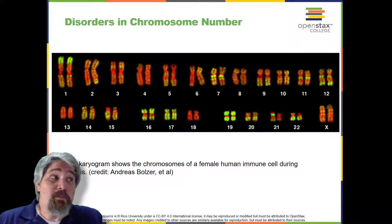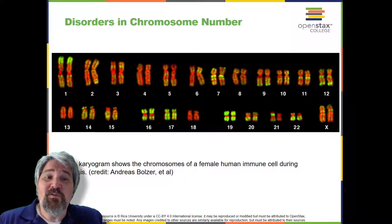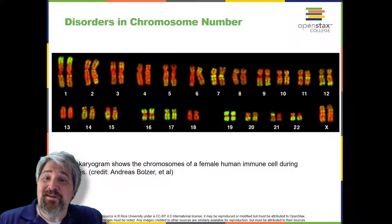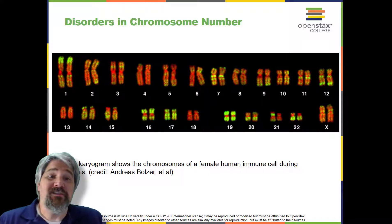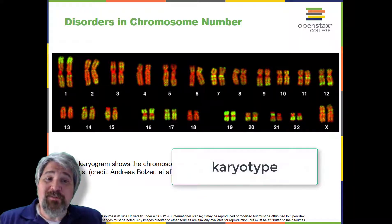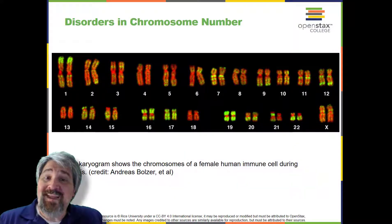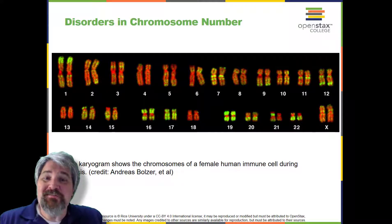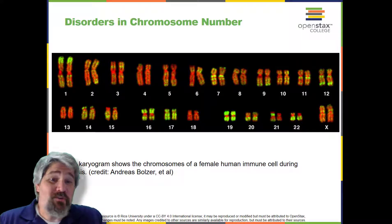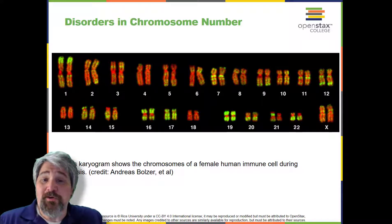Disorders in chromosome number: the isolation and microscopic observation of chromosomes form the basis of cytogenetics and is the primary method by which clinicians detect chromosomal abnormalities in humans. A karyotype is the number and appearance of chromosomes, including their length, banding patterns, and centromere position. To obtain a view of an individual's karyotype, cytologists photograph the chromosomes and then cut and paste each chromosome into a chart, or karyogram.